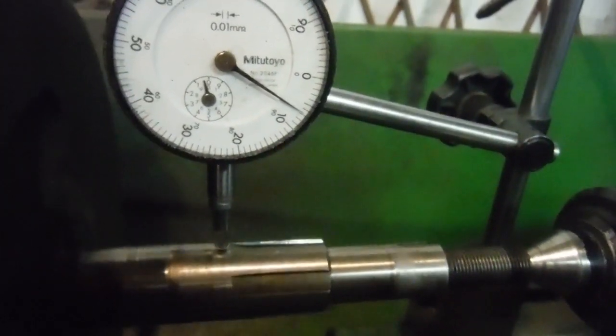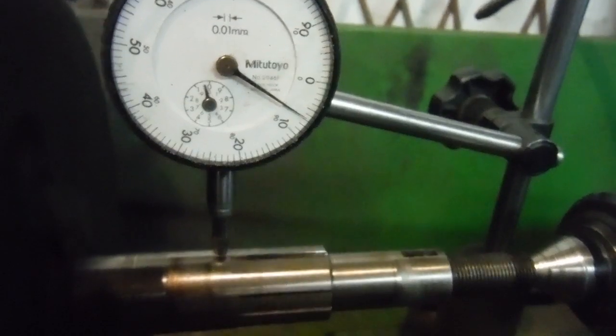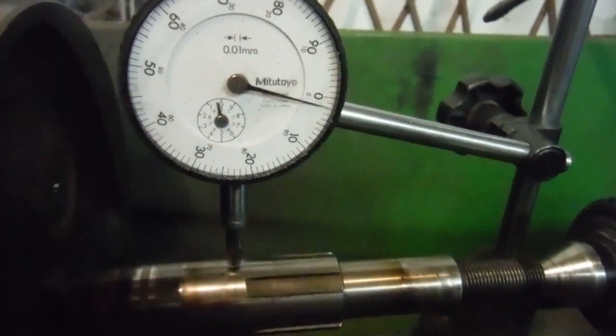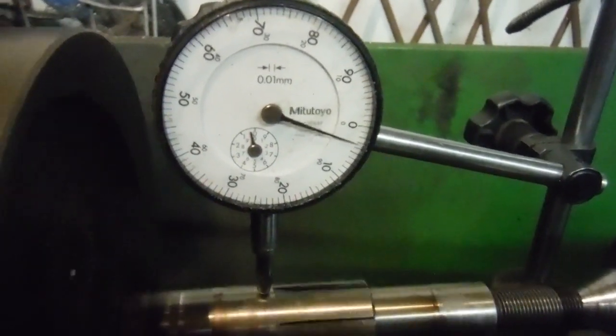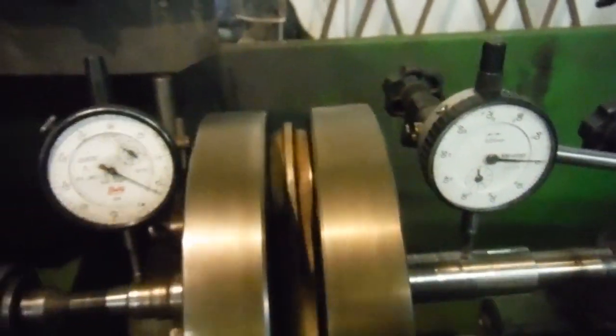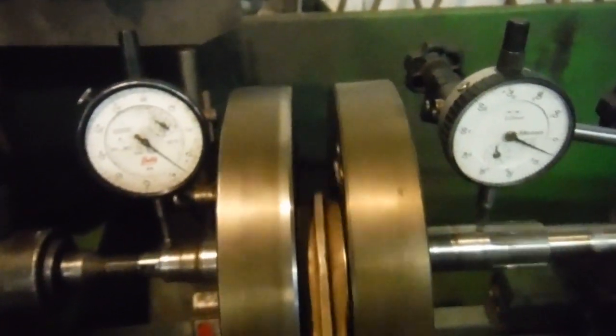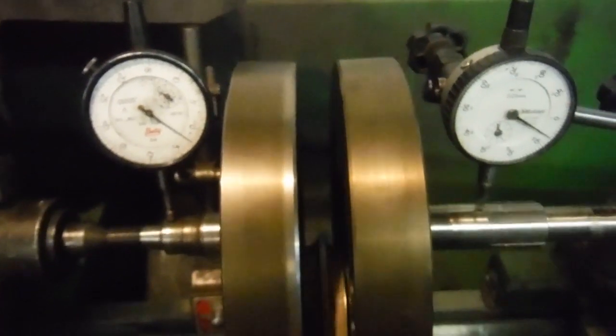Likewise, we're probably under three thousandths of an inch on that one there. From one number to the next would be four thousandths of an inch. The beauty of this is that both needles are rising and falling at the same time.